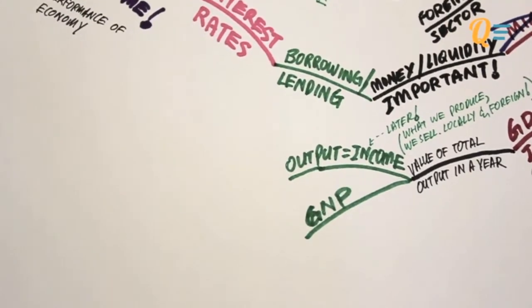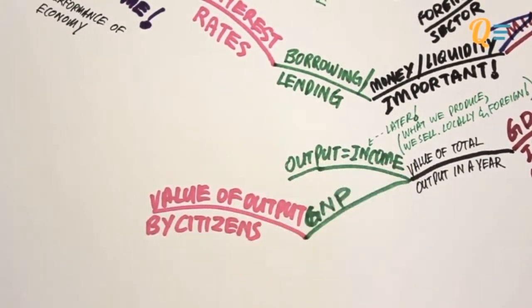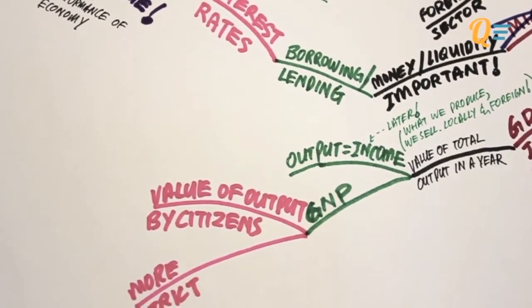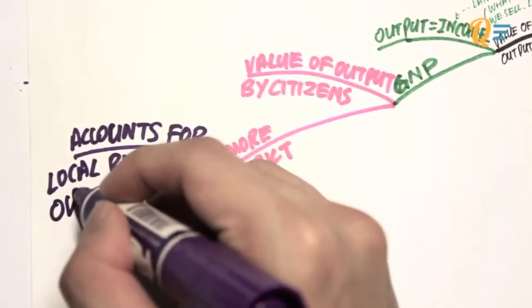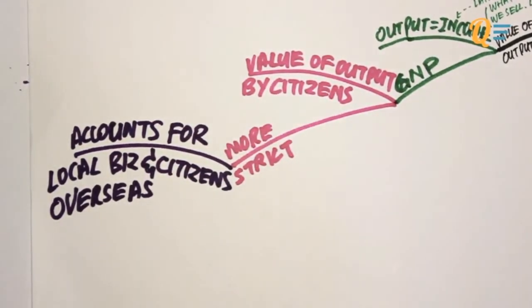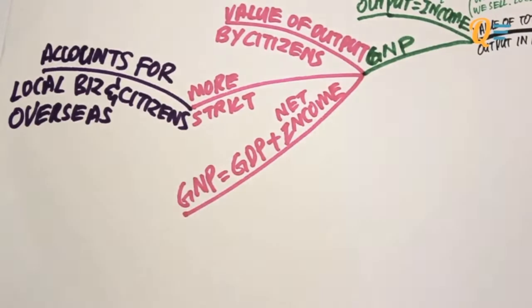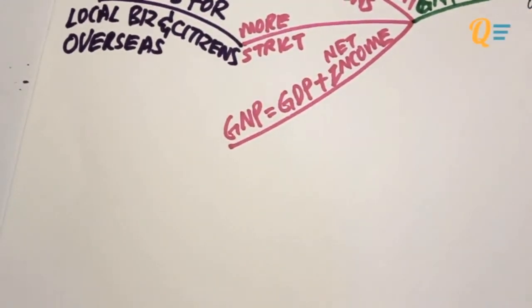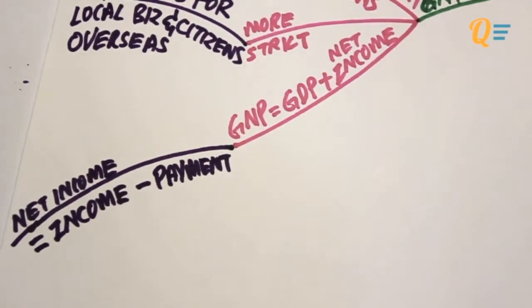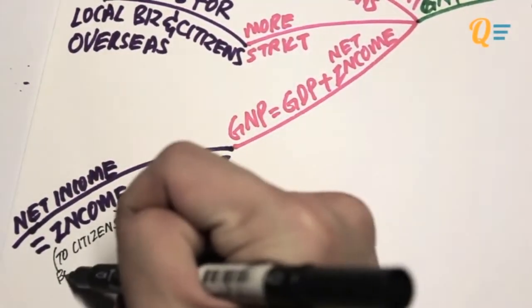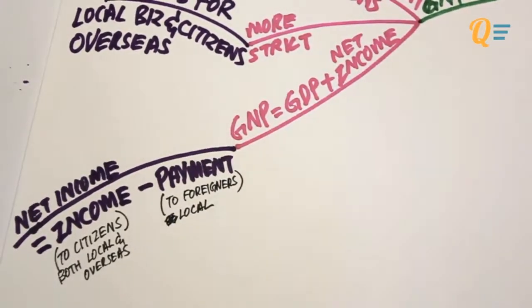Another way of measuring output is the GNP, which stands for Gross National Product. This is defined as the value of output by citizens of that particular country. This is a more strict way of measuring output because it accounts for local businesses as well as citizens located overseas. To calculate your GNP, you take the GDP value and add net income. Net income is total income minus total payments. Income refers to income earned by citizens or businesses located in this country or overseas, while payments refers to payments to foreigners located within that country.